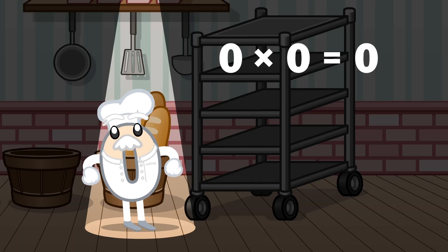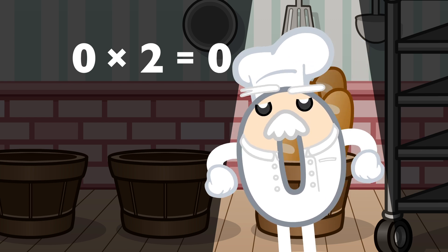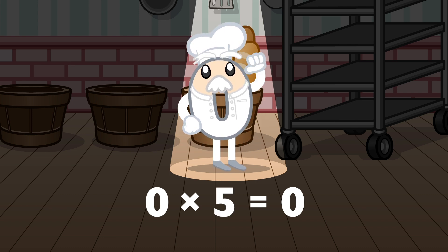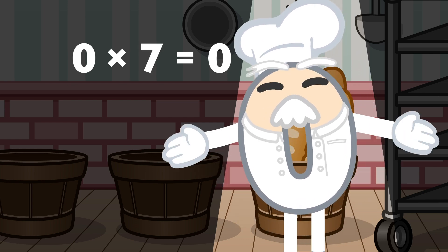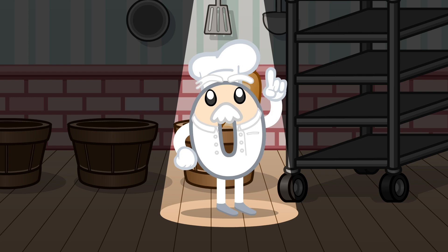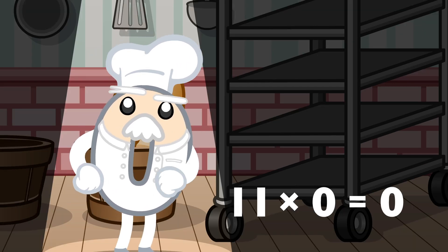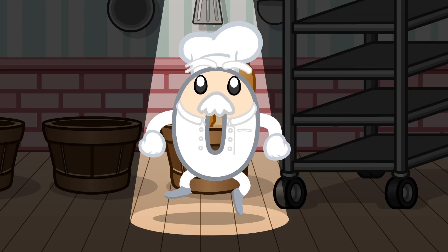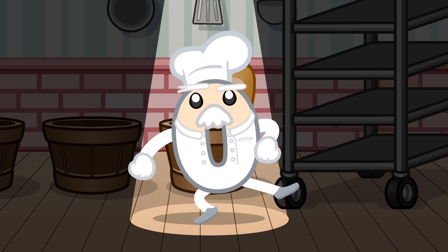Zero times zero equals zero. Zero times one equals zero. Zero times two equals zero. Zero times three equals zero. Zero times four equals zero. Zero times five equals zero. Zero times six equals zero. Zero times seven equals zero. Eight times zero equals zero. Nine times zero equals zero. Ten times zero equals zero. Eleven times zero equals zero. Twelve times zero equals zero. And now you can see — when you multiply by zero, the answer will always be zero!